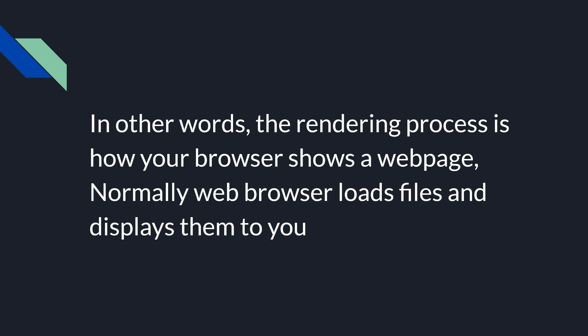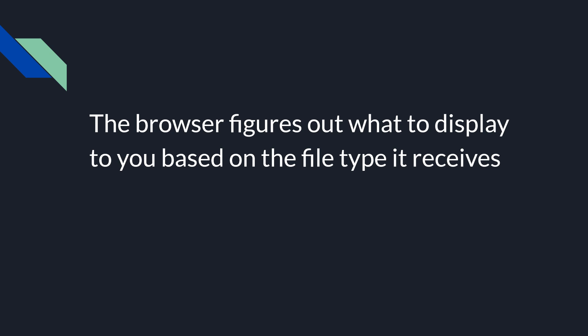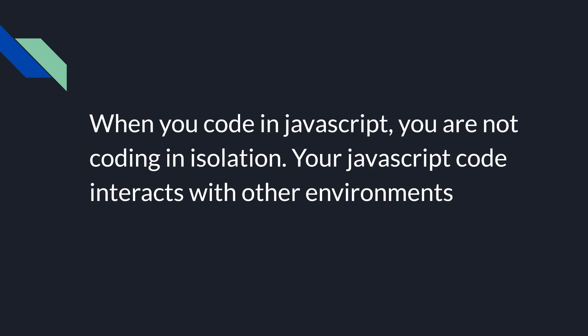In other words, the rendering process is how your browser shows a web page. The browser loads files and displays them to you, figuring out what to display based on the file type it receives. When you code in JavaScript, you are not coding in isolation — your JavaScript code interacts with other environments.